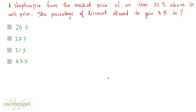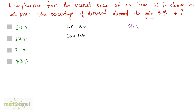A shopkeeper fixes the marked price of an item 35% above its cost price. What percentage discount should be allowed to gain 8%? Let cost price = 100 rupees. The marked price (selling price) is 100 + 35 = 135. To gain 8% on cost price, the required selling price after discount = 100 + 8 = 108.